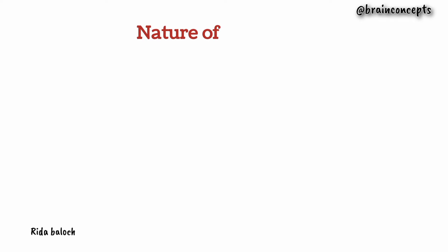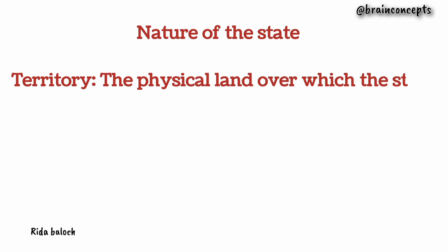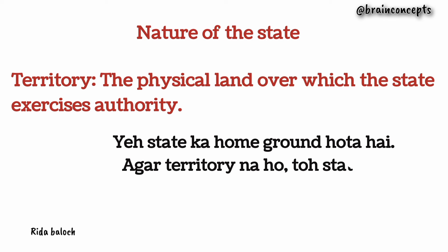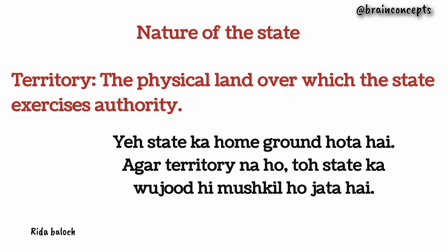Now we will talk about the state's nature. What is the actual measure of a state? The state's core components are its basic structure. There are four main components which define any state. The first one is territory — the geographical area over which the state has its authority. Without territory, a state's existence is very difficult.